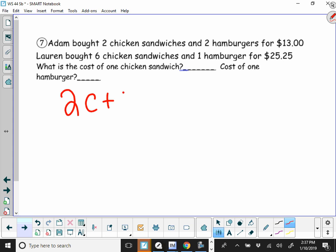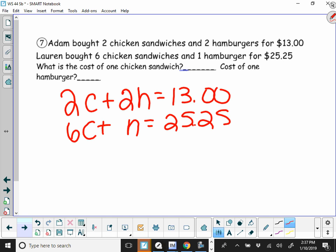Two chicken sandwiches and two hamburgers is $13. Six chicken sandwiches and one hamburger is $25.25. Easy thing here would be to multiply the bottom by negative 2, or you can multiply the top by negative 3. Either way.